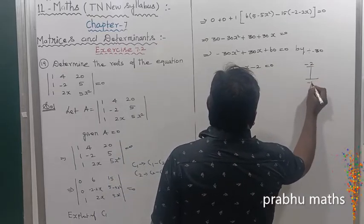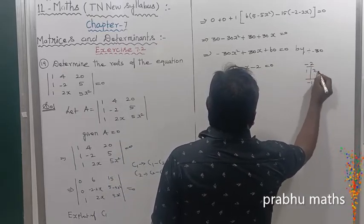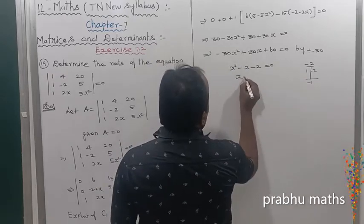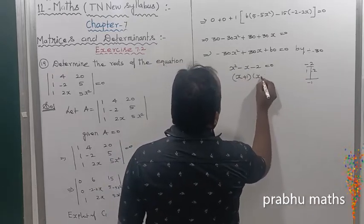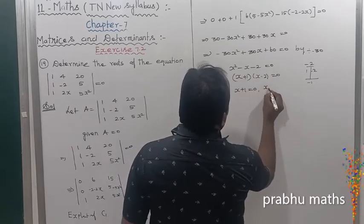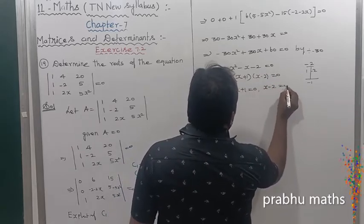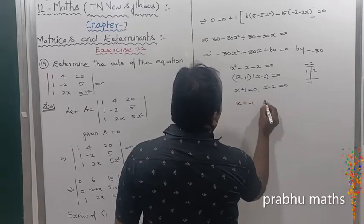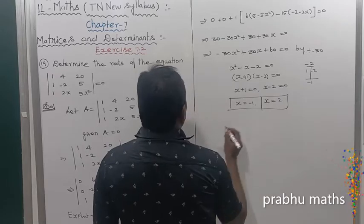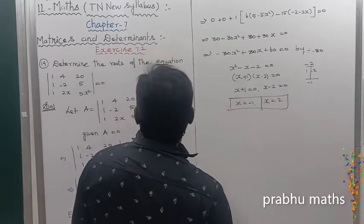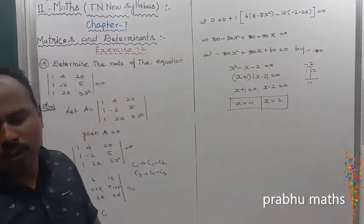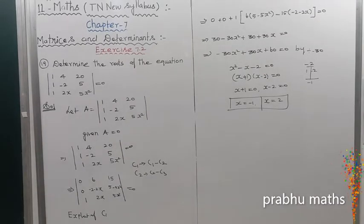Factoring: multiplication gives minus 2, addition gives minus 1. So x plus 1 into x minus 2 equals 0. Therefore x plus 1 equals 0 gives x equal to minus 1, and x minus 2 equals 0 gives x equal to plus 2. We get the result of the roots: x equal to minus 1 and x equal to 2.